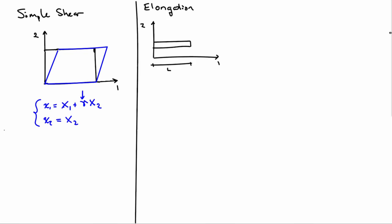Another basic deformation is known as elongation, sometimes called simple elongation. You have a bar of material of length L, say oriented in the one direction, and after deformation it just extends out and its new length is some parameter—let's say alpha—times the original length L.